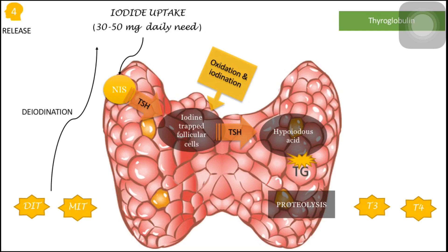These are the four simple steps for the synthesis of thyroid hormones in our body: the first step is iodide uptake, the second step is oxidation and iodination of the trapped iodine to form hypoiodous acid, the third step is the coupling process to form T3 and T4, and the last step is the release of the formed T3 and T4 into the bloodstream.